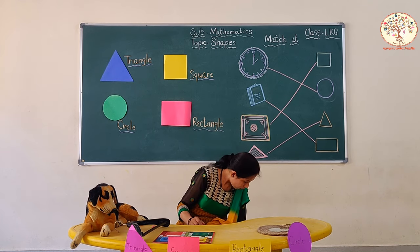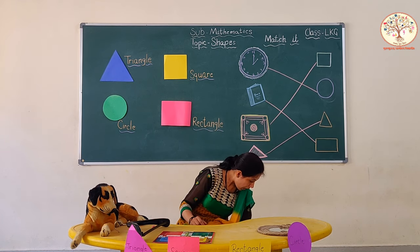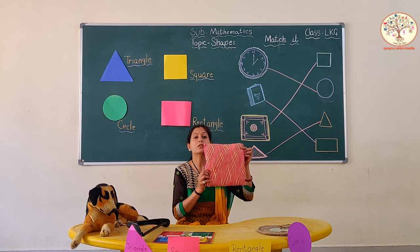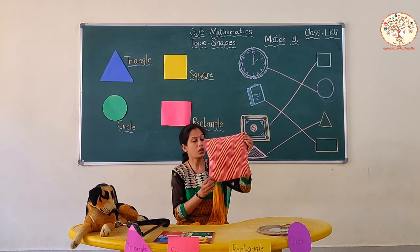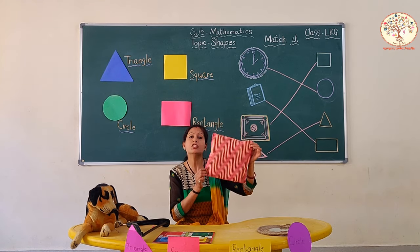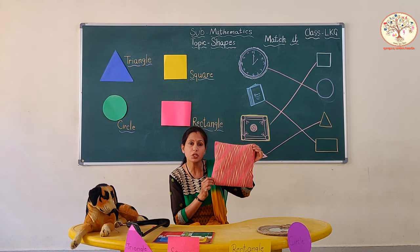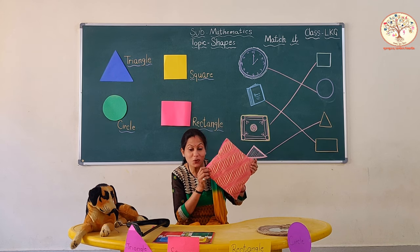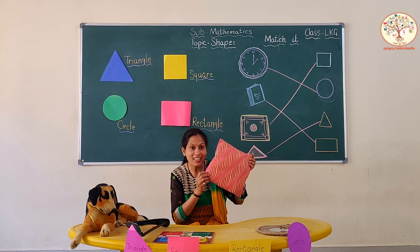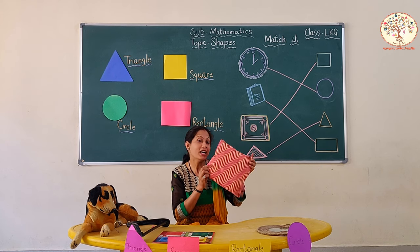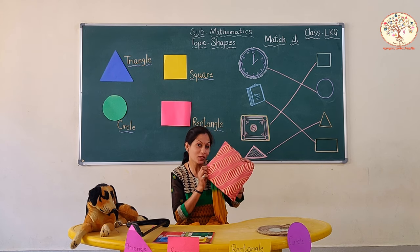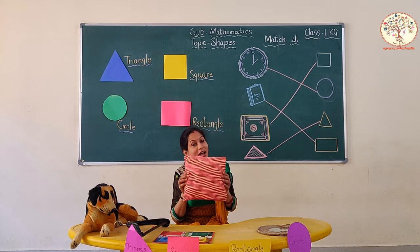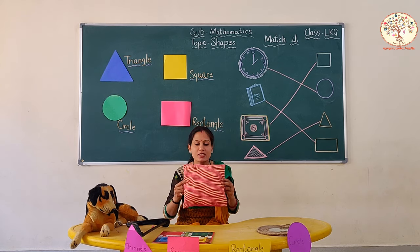Now, I have a cushion. What is the shape of this cushion? Square. So, it belongs to the square house.